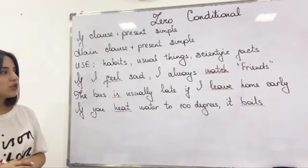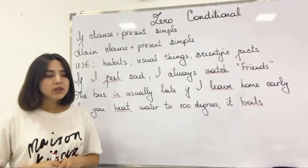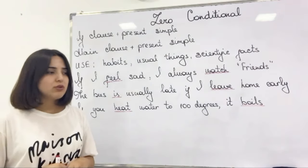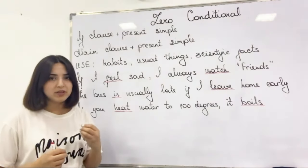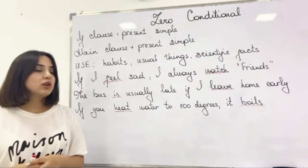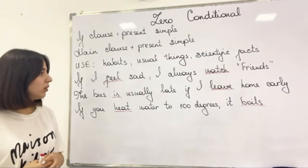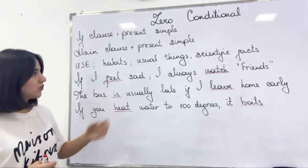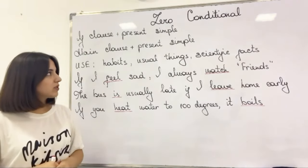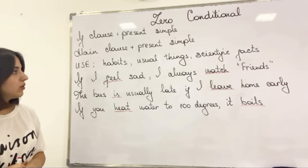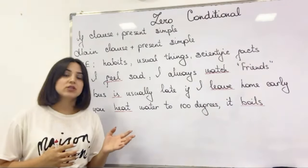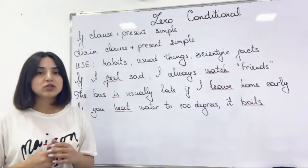The second sentence is: if I leave home early, the bus is usually late — it's also called Murphy's Law. So like we try to do something better, but bad things always happen to us, they always follow us. You see 'is', which is a present simple form of 'to be', and 'leave', a present simple verb again. And it is about a situation that usually happens to us.